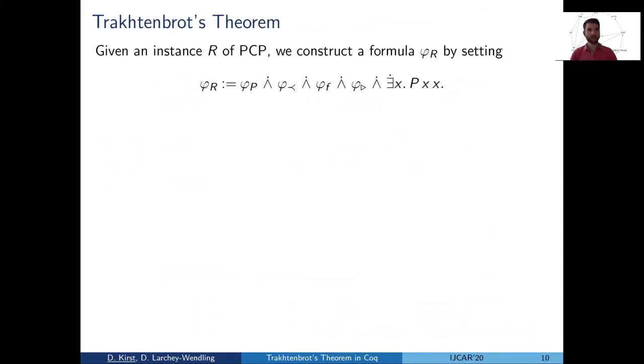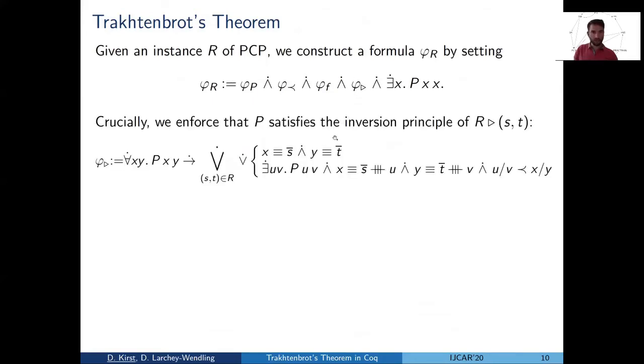How do we go on? Given a particular instance R of PCP, we encode it as a formula, phi R, where phi R contains the axioms we have seen before. And then asks whether the model we are looking at thinks that there is a match. And the crucial part that I have to explain now is phi triangle, which encodes the inversion principle of derivability.